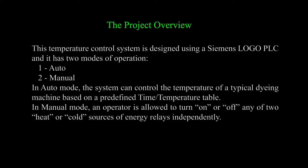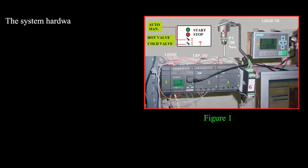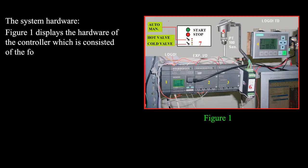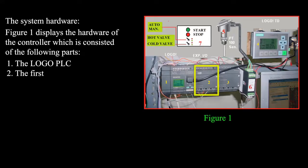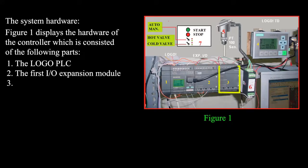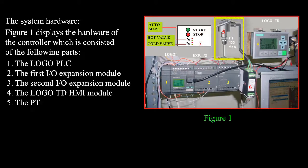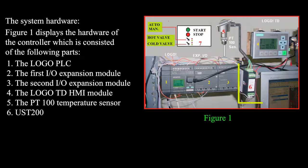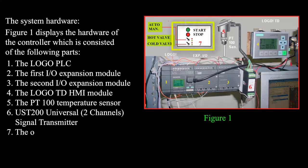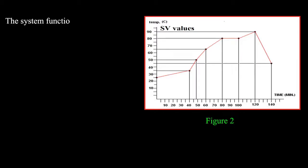The system hardware consists of the following parts: the LOGO PLC, the first I/O expansion module, the second I/O expansion module, the LOGO TD HMI module, the PT100 temperature sensor, the UST 200 universal signal transmitter, and the operator's panel.